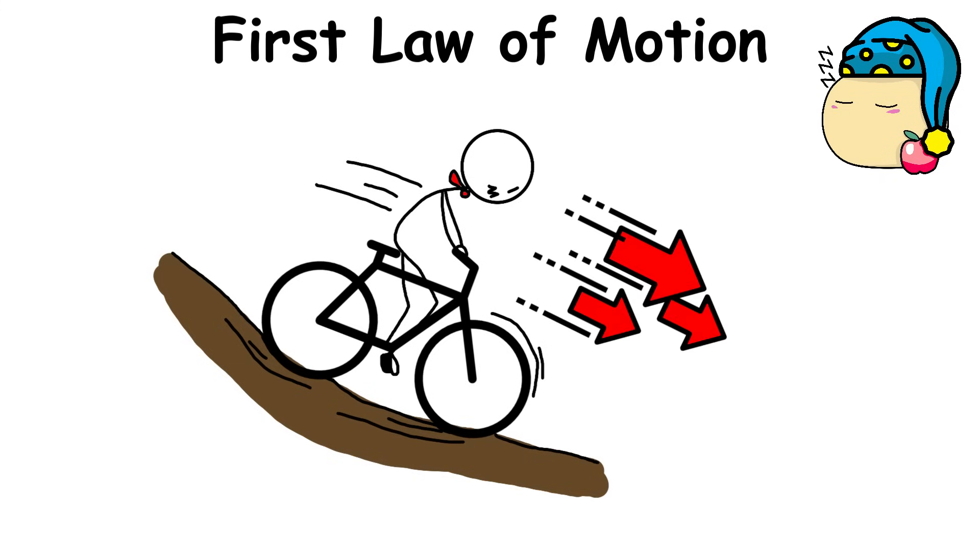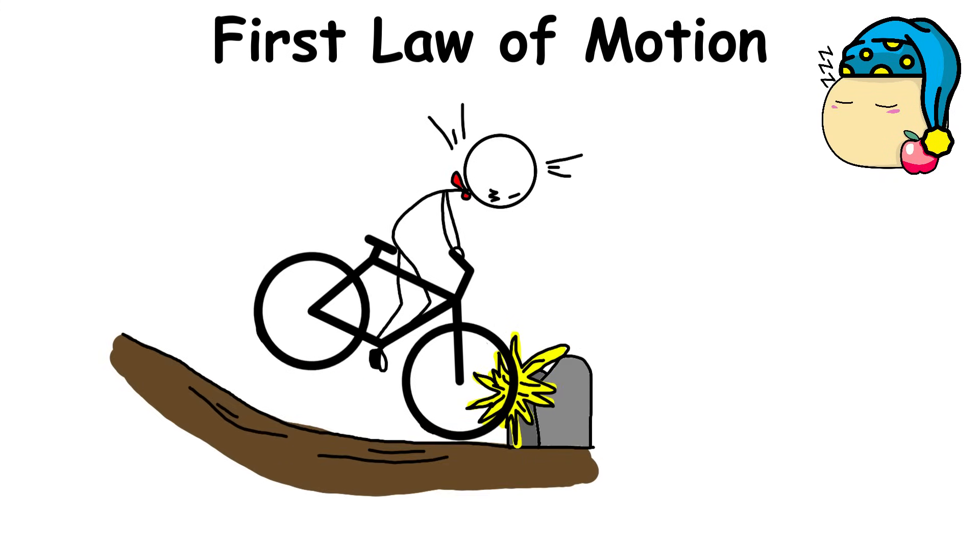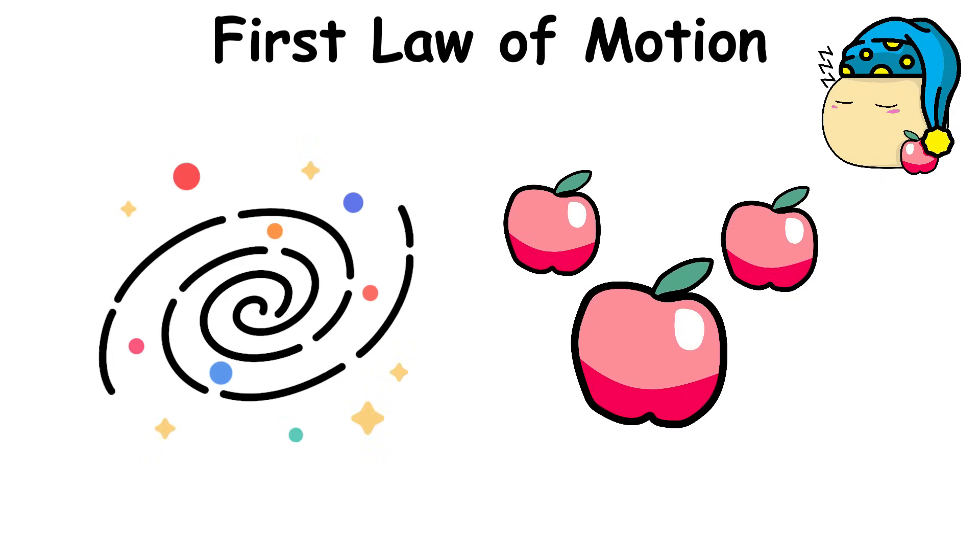A bike rolling down a hill will keep moving until it hits something, unless someone hits the brakes. Every object in the universe acts like that.